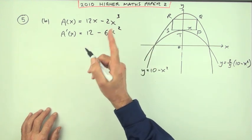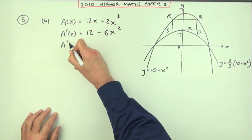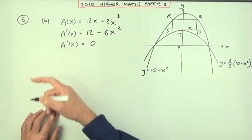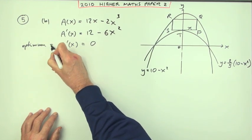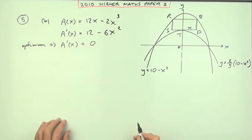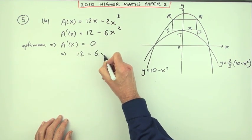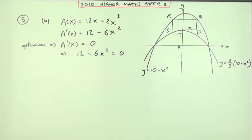Now make a statement. Where will you find this maximum, this optimum value? That'll happen when the derivative is equal to 0. You can put a little note at the beginning if you like. You can say optimum value means the derivative should be 0. So now you've got this equation. 12 minus 6x squared equals 0.